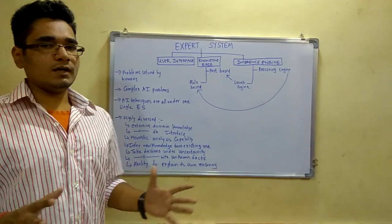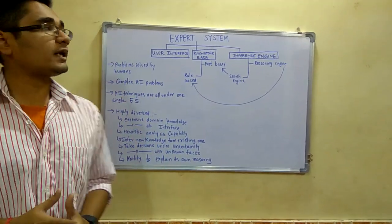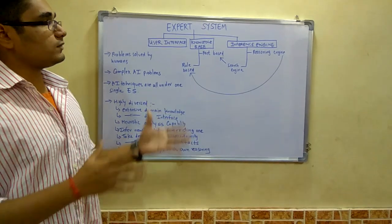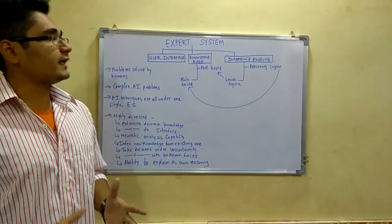This is a wider scope of artificial intelligence. Many things come under artificial intelligence. Expert system is one of the domains of artificial intelligence we can say.